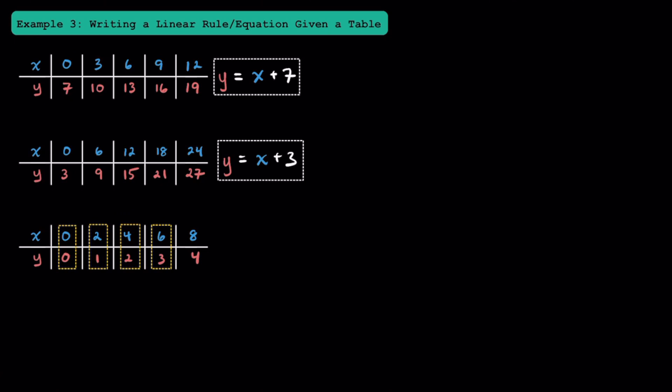Dividing 6 by 2 gives 3, and dividing 8 by 2 gives 4. And going back to when x was equal to 0, 0 divided by 2 equals 0. To get each y value, we divide each x value by 2, or multiply each x value by one-half. Remember that multiplying by one-half is the same thing as dividing by 2. Our linear equation here is y is equal to one-half times x. While you could also write x over 2, it's more common to write a coefficient in front of the independent variable.